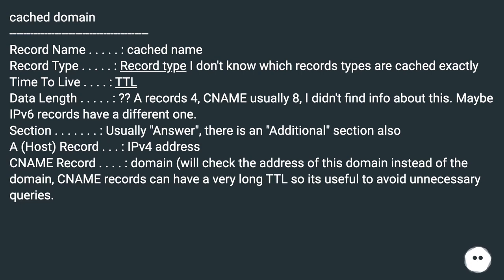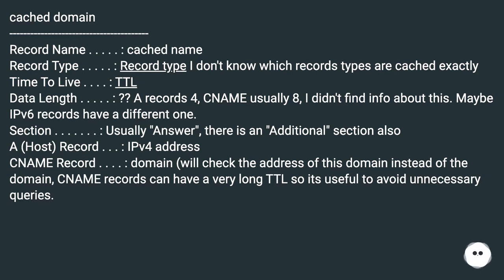A host record holds an IPv4 address. A CNAME (name record) points to a domain — it will check the address of that domain instead of storing it directly. Name records can have a very long TTL, so using them is useful to avoid unnecessary queries.